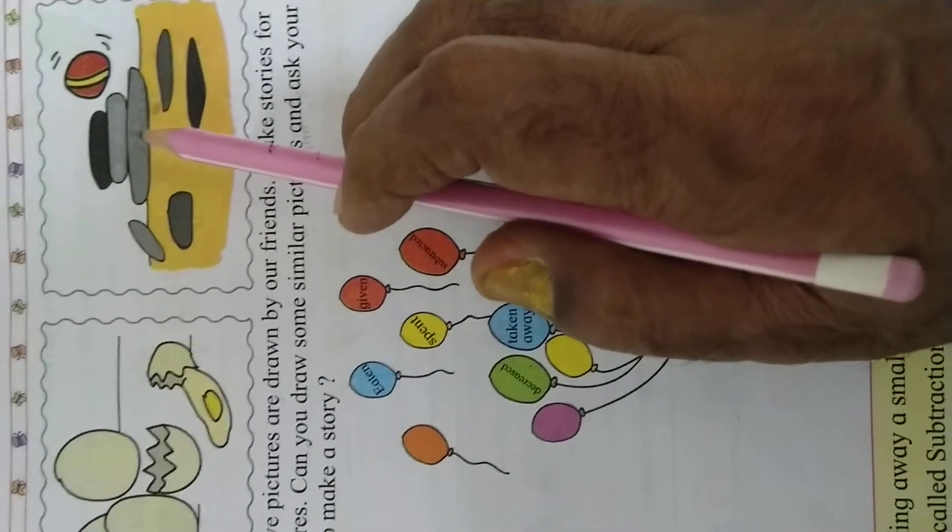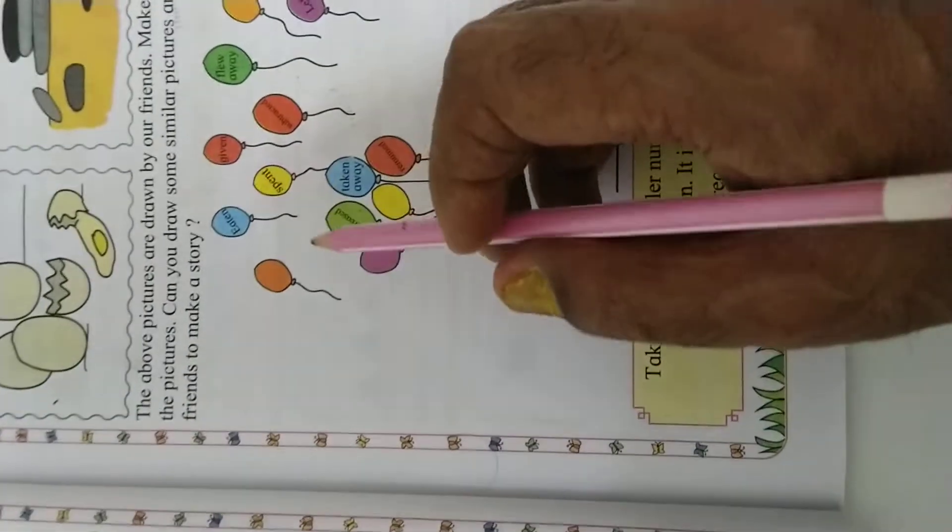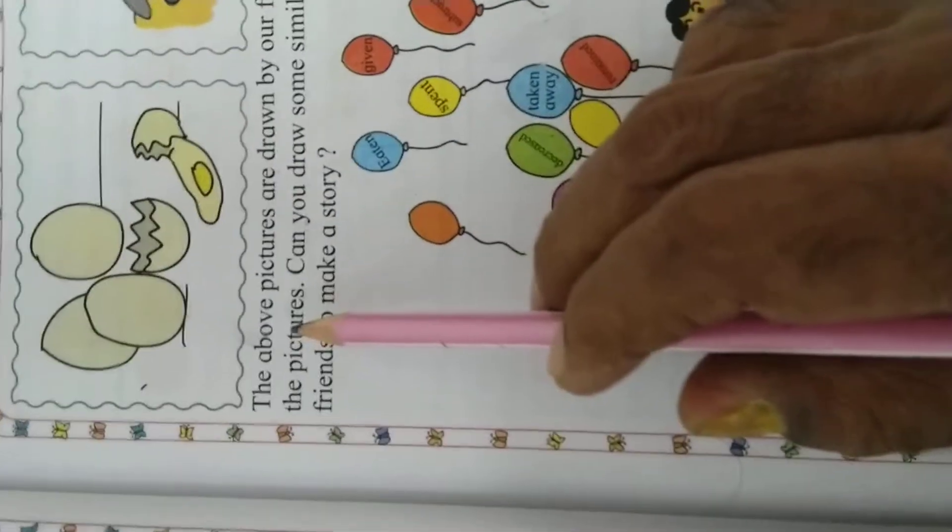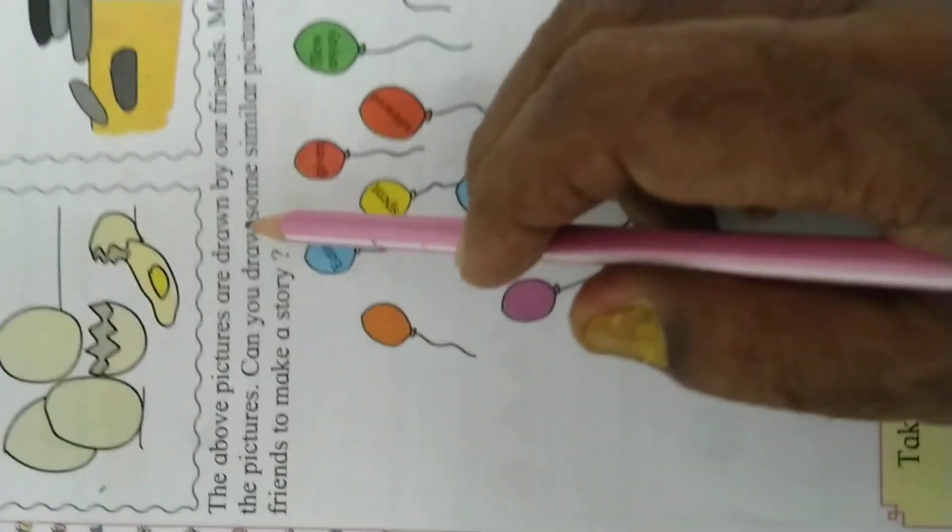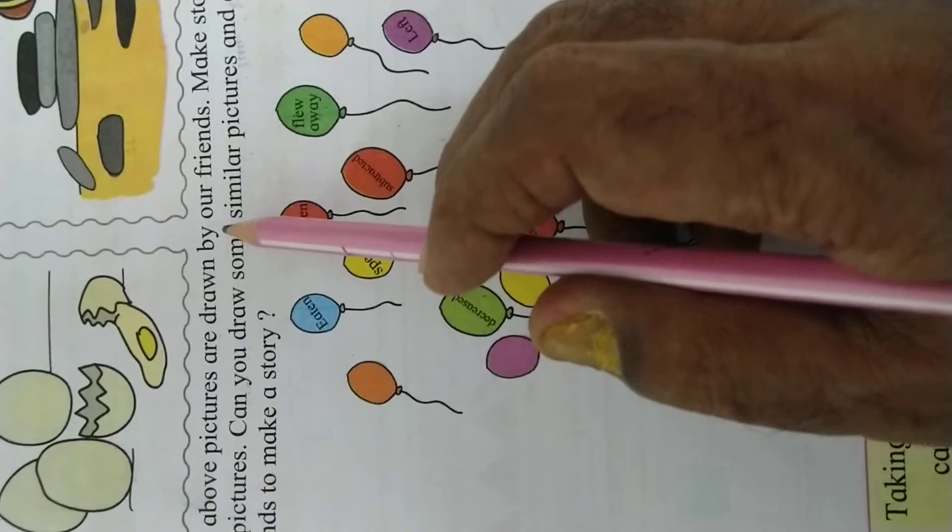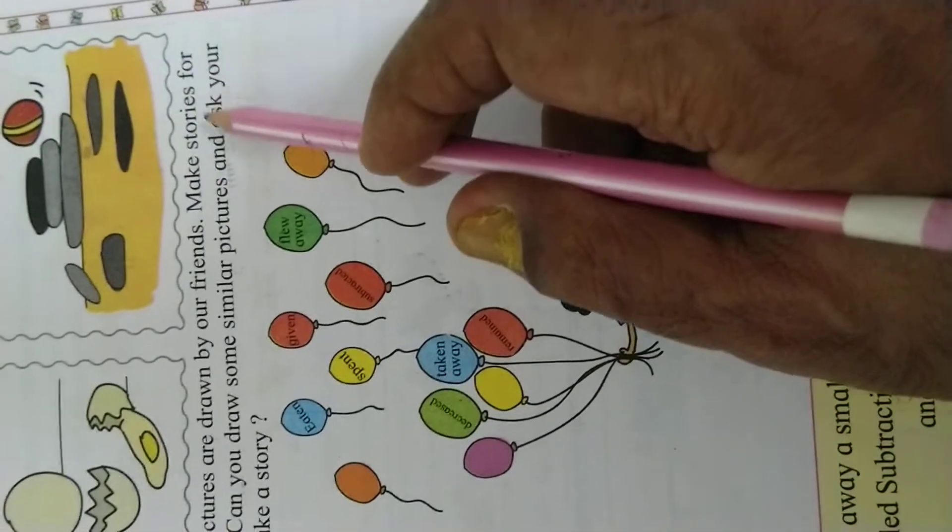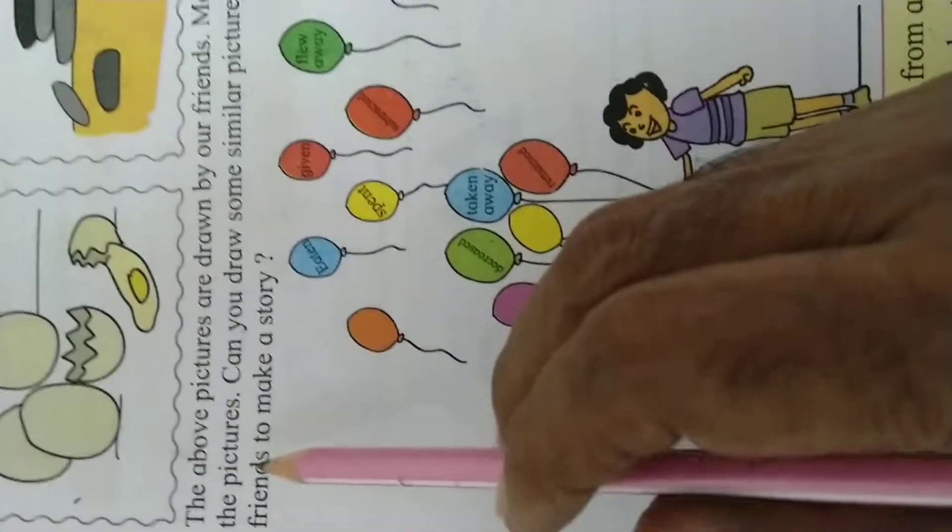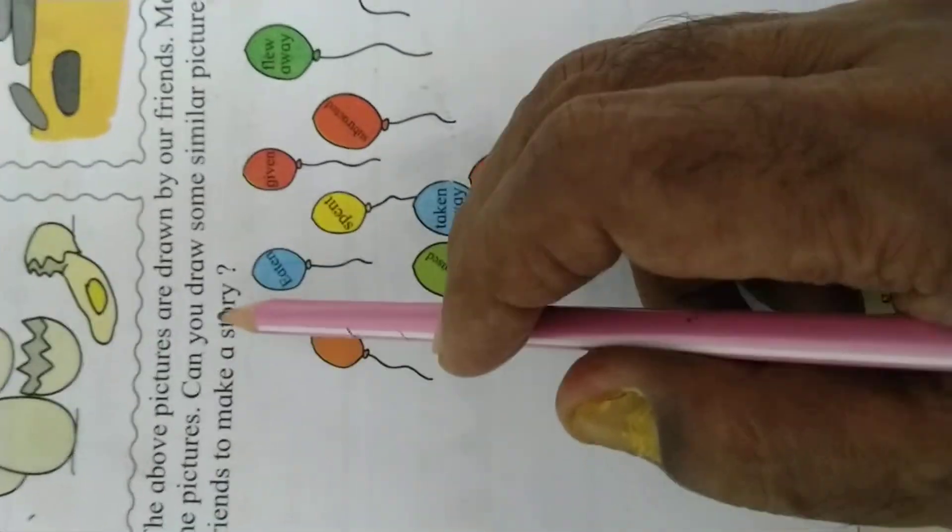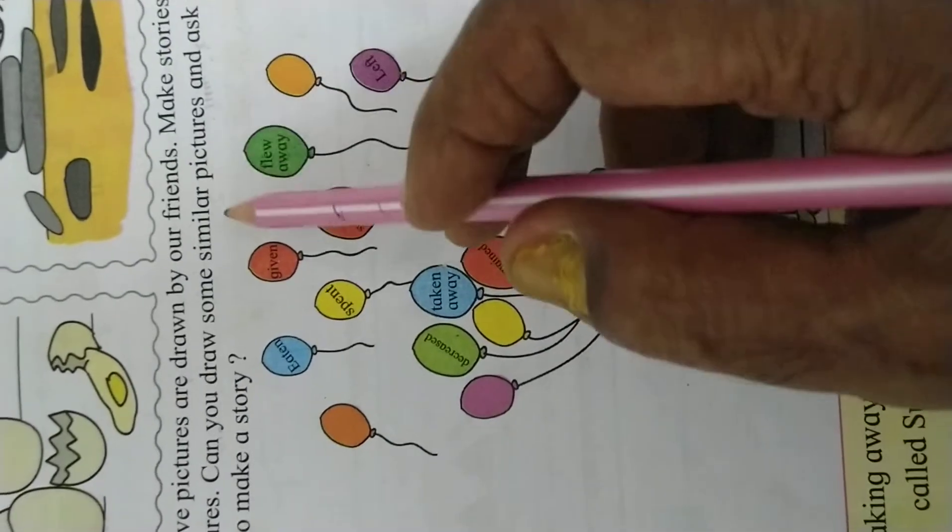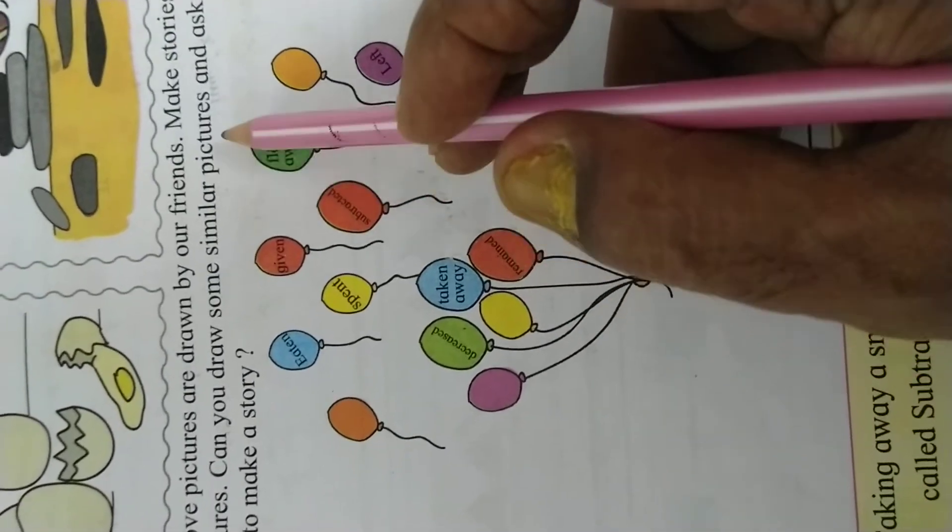Now here is three. In this way, the above pictures are drawn by your friends. Make us to make a story for the picture. Can you draw some similar picture and ask your friends to make a story?